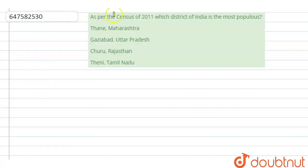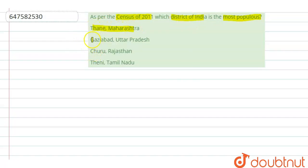Hello everyone. Our question is: as per the census 2011, which district of India is the most populous? Our options are: Thane Maharashtra, Ghaziabad, Uttarakhand, Churu Rajasthan, or Thane Tamil Nadu.